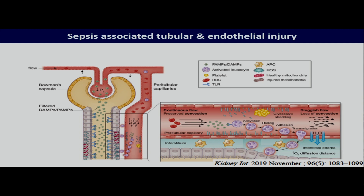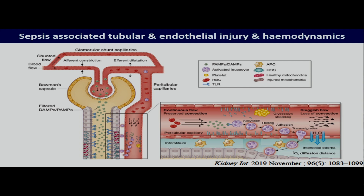This, together with the impaired microcirculation, really causes stress in tubular cells and may lead to apoptosis and, at some stage, even cell death, where the cells are being attacked from both sides — from within the lumen and also by not receiving adequate support from the microcirculation. And if you then combine this with shunting, where glomerular function ceases, it's easily understandable why kidney function could be impaired in sepsis.